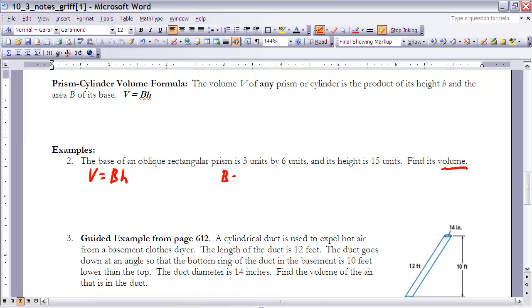Well, the base we can find. We aren't given it, but we know it's a rectangle, and it's 3 by 6. So I'm going to take 3 units times 6 units. Therefore, the area of the base is 18 square units. And we're also given that the height of this is 15 units.